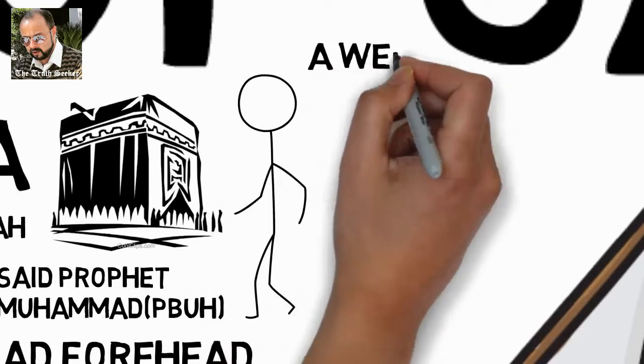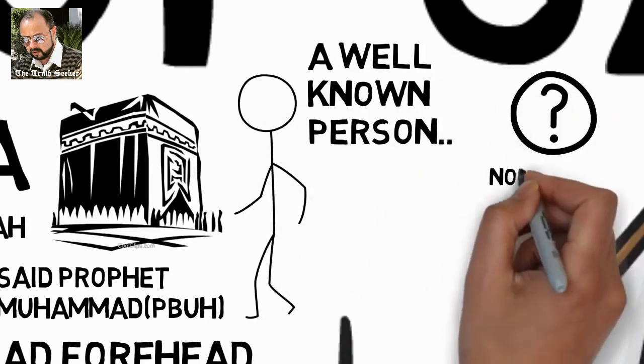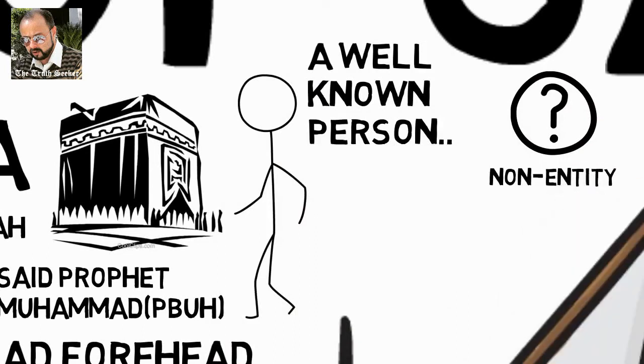He'll hurry from Medina to Mecca. As he approaches Mecca, people are going to come out to him, so this has to be a well-known person, not some obscure non-entity, a well-known person.